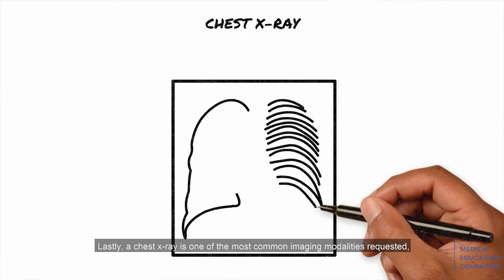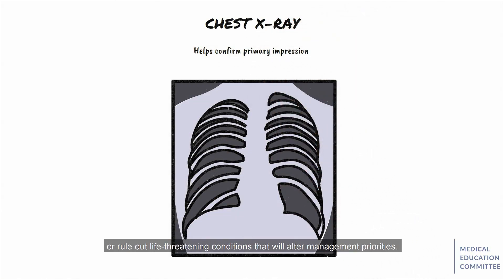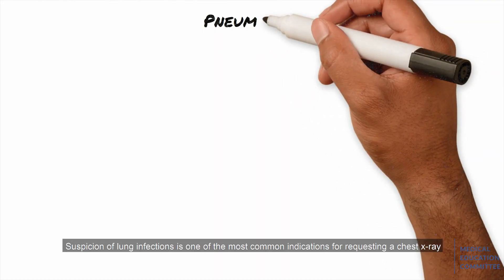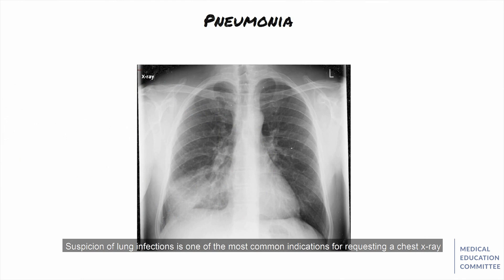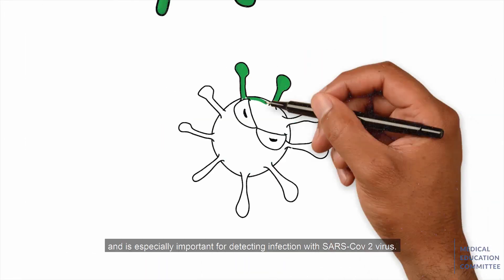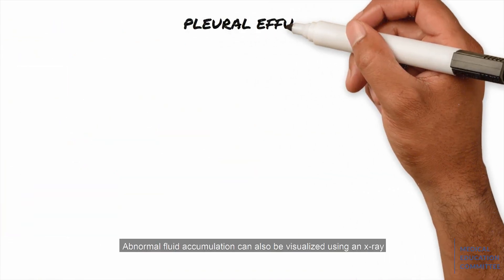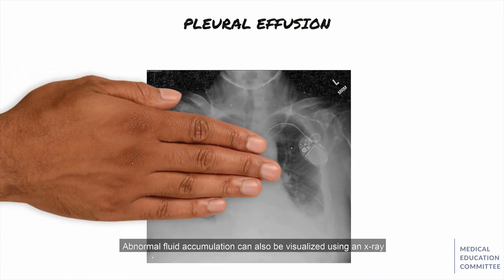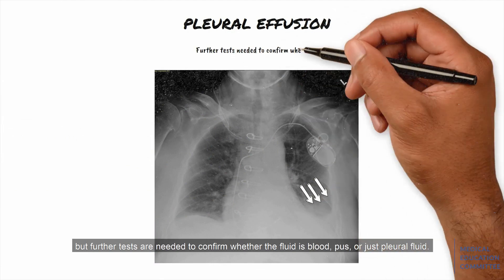Lastly, a chest x-ray is one of the most common imaging modalities requested, as it can help confirm primary impressions or rule out life-threatening conditions that will alter management priorities. Suspicion of lung infections is one of the most common indications for requesting a chest x-ray, as it helps differentiate between infection of a bacterial, fungal, or viral cause, and is especially important for detecting infection with the SARS-CoV-2 virus. Abnormal fluid accumulation can also be visualized using an x-ray, but further tests are needed to confirm whether the fluid is blood, pus, or just pleural fluid.